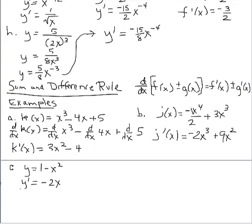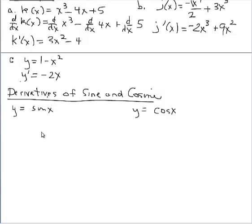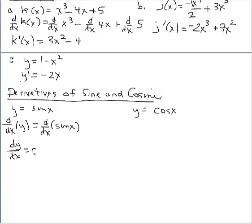One last thing to look at is the derivatives of sine and cosine. In this video we look at just two of the six trig functions. The derivative of sine, which you may remember from earlier reading, is cosine. We can look at a graphical representation in class, but for now commit this to memory: dy dx of sine x equals cosine x. The derivative of cosine, one would think, would be sine — but the derivative of cosine is the opposite of sine, negative sine.